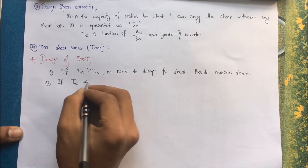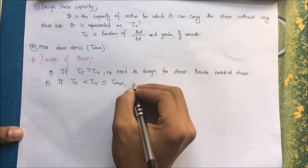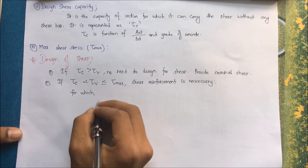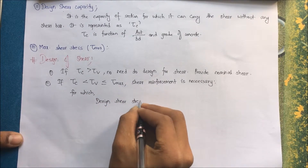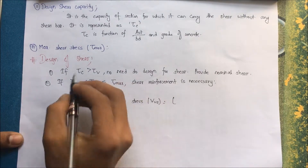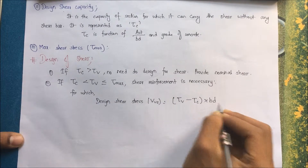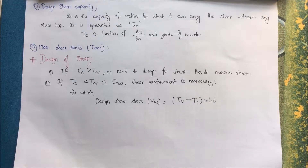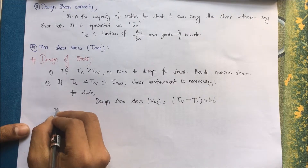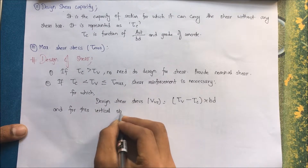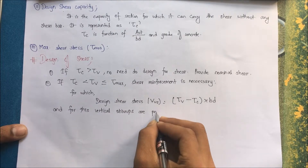Case 2: if τc is less than τv and τv is less than τmax, then shear reinforcement is necessary. The design shear force Vus equals (τv minus τc) multiplied by BD, because for shear stress up to τc no stirrups are needed, but beyond τc reinforcement is required. Vertical stirrups are provided as shear reinforcement.